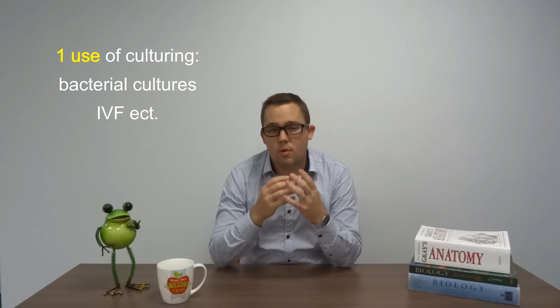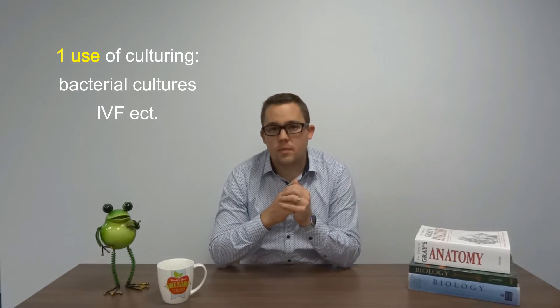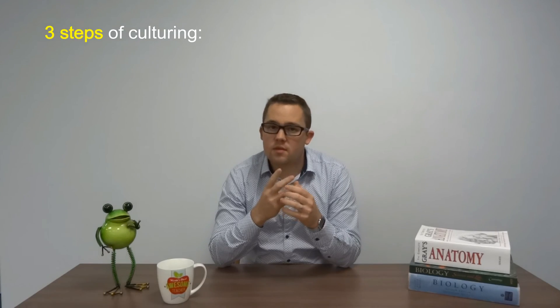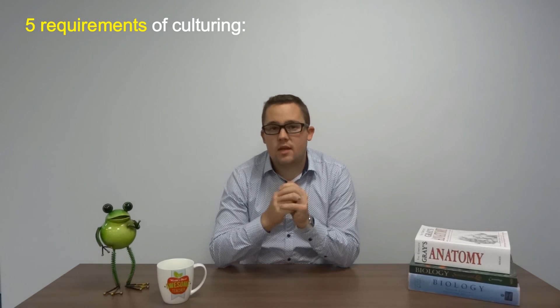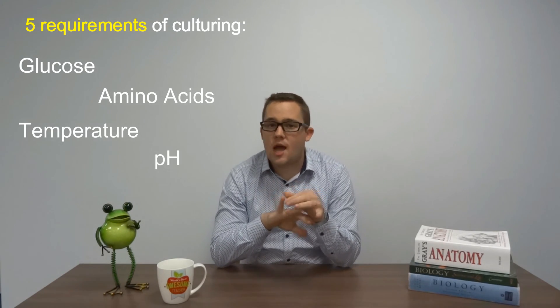So what have we learned today? We've learned about cell culturing and how important it is. SACE will want you to have an understanding of at least one modern application of cell culturing. You also need to know those three steps: dissection, suspension, and then culture. And you need to know at least five requirements for the process. Like I said, glucose, amino acids, correct temperature, correct pH, and nucleotides. I hope it helped and thank you very much.